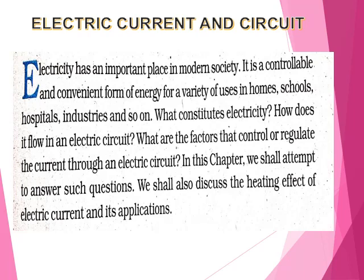So what is the electric current and circuit? Electricity has an important place in modern society. It is a controllable and convenient form of energy with a variety of uses in homes, at school, hospital, industries, and everywhere. So what constitutes this electricity? How does it flow in an electric circuit? From where does this electricity come? What are the factors that control or regulate the current through the electric circuit? All these questions might come to your mind when you study electricity, and in this chapter we shall attempt to answer these questions.